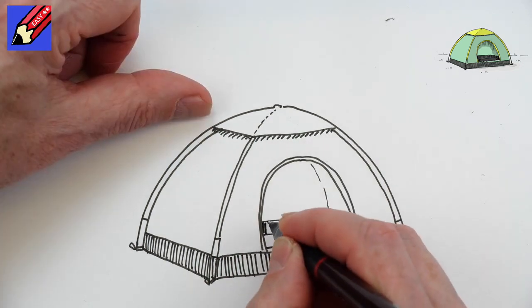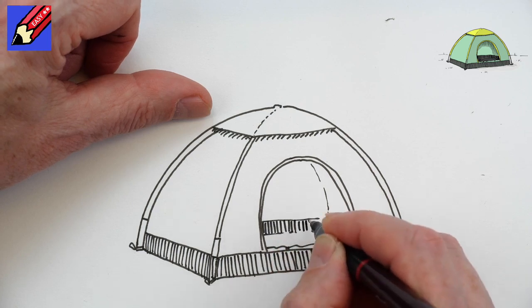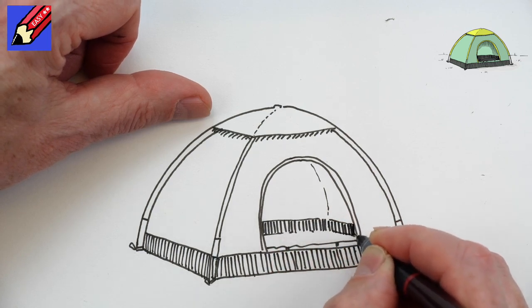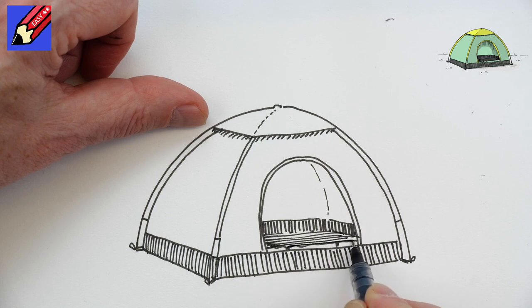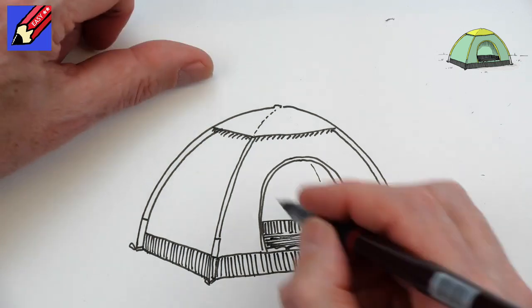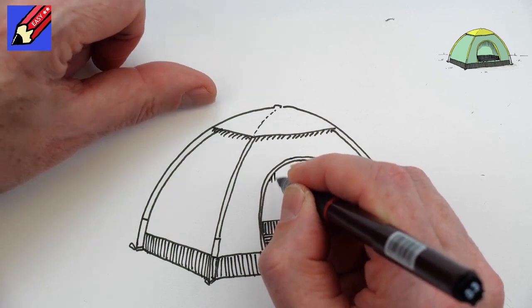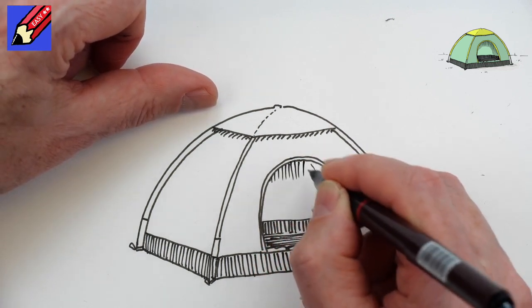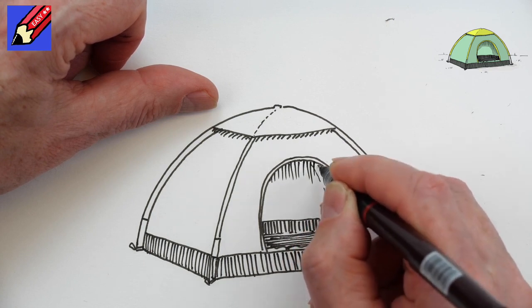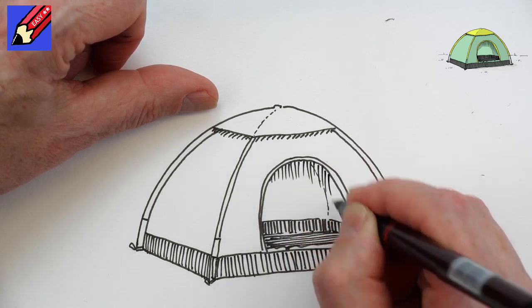We're going to have this ground sheet inside the tent as well. That's the vertical part of it. This is the horizontal bit which is lying down on the floor, keeping you dry inside the tent. We might want some shading on the inside to help show up the entrance like that.